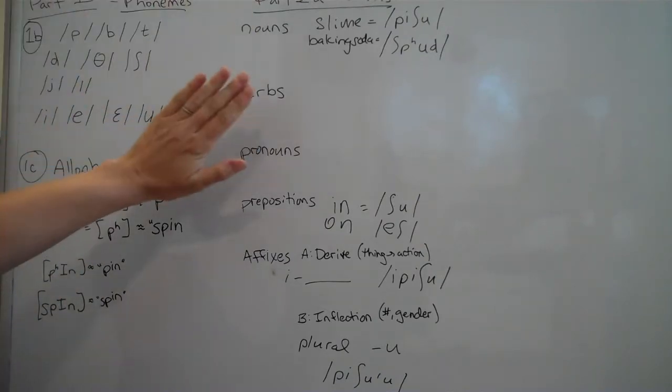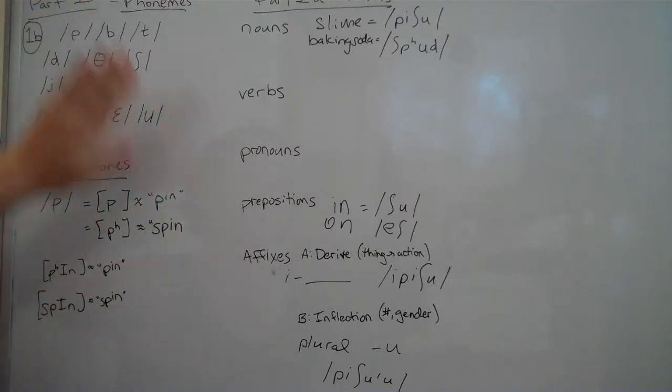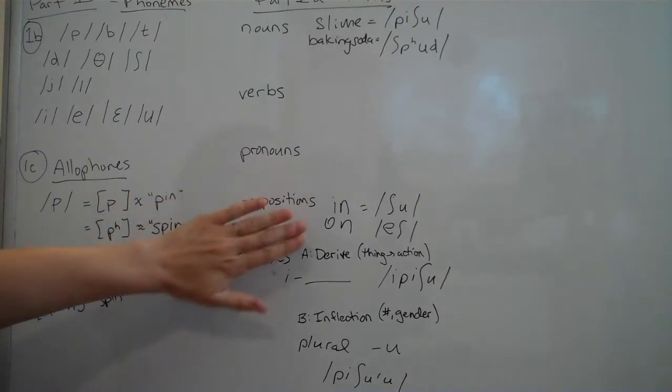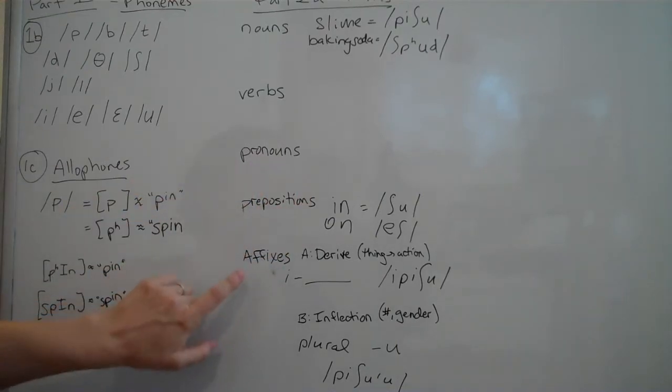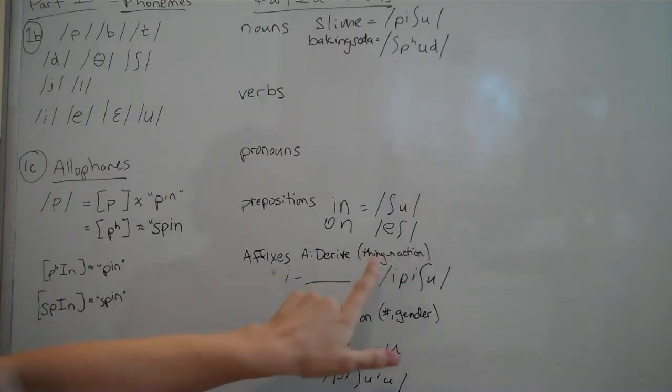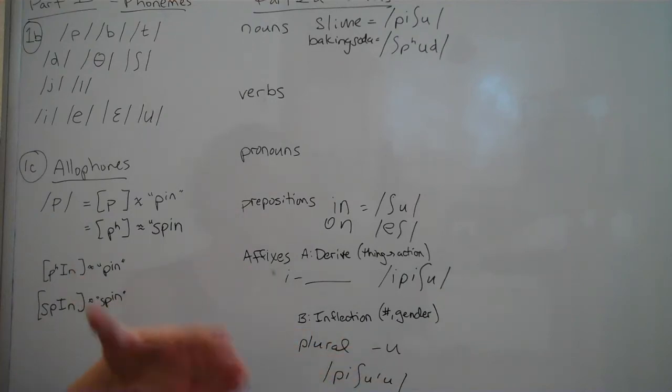So part two this week we're going to make words using the consonants that we've picked. And you need to make nouns, verbs, pronouns, prepositions like in or on, and then a couple of kinds of affixes. Something to derive a word from a noun to a verb, a thing to an action, or vice versa. And something to inflect a word, to make it plural, like there are many, or there's one, two, and many, however you want to do it. Or to change the gender, like if you have a gendered language that includes that in the words.